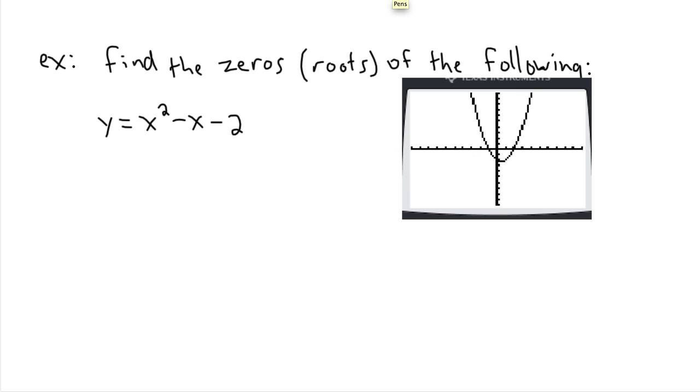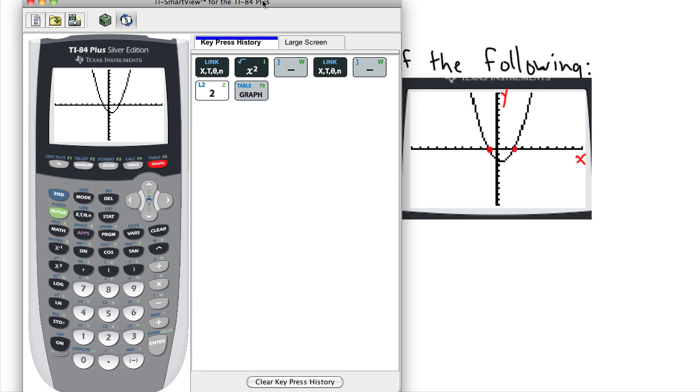What I want to do is try to find these values here, where this graph crosses the x-axis. These are the zeros or roots or x-intercepts. Remember, this is x, this is y. So I want to find this point and this point. Now it looks like it's -1 and +2. But in order to be absolutely sure, it helps to use your calculator and ask it.